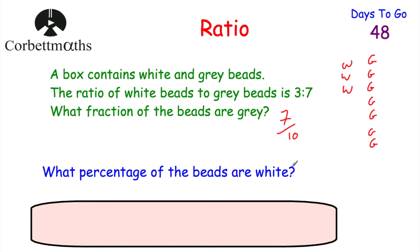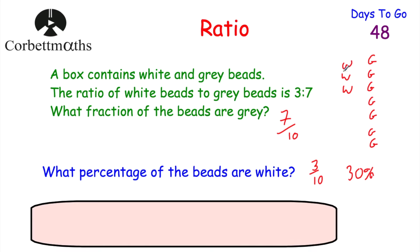The next question asks: what percentage of the beads are white? Since seven tenths are grey, three tenths are white. We just need to convert three tenths to a percentage. Three divided by 10 is 0.3, which is 30%. Alternatively, you might just know that three tenths is 30%. So 30% of the beads are white, and 70% are grey.